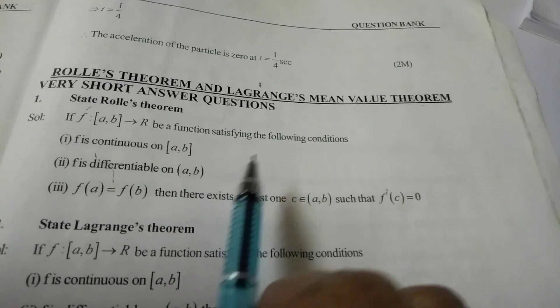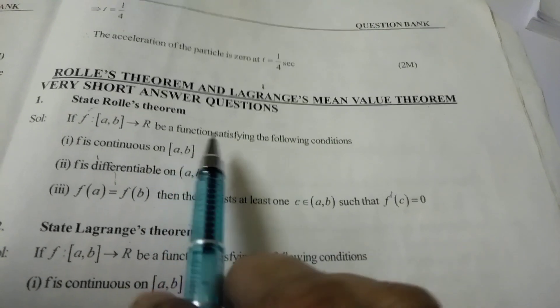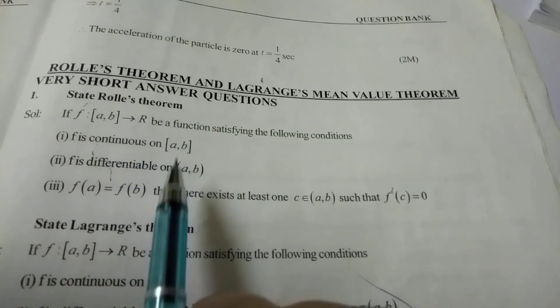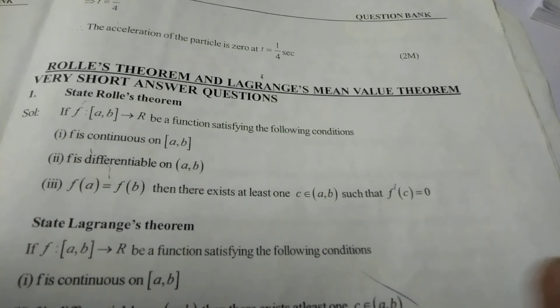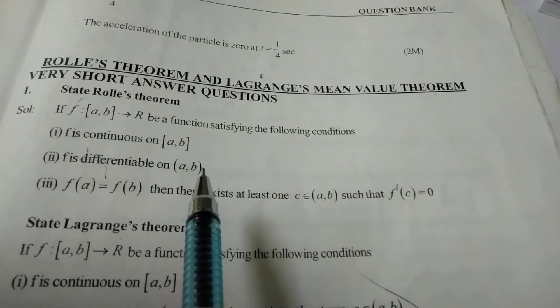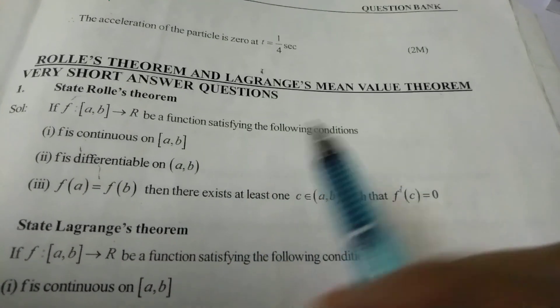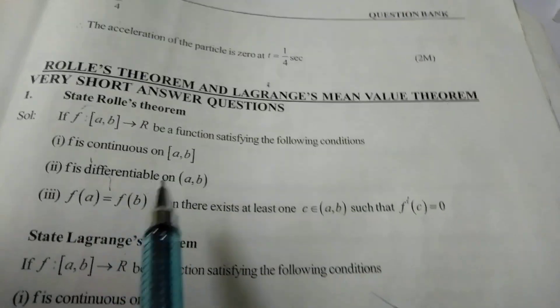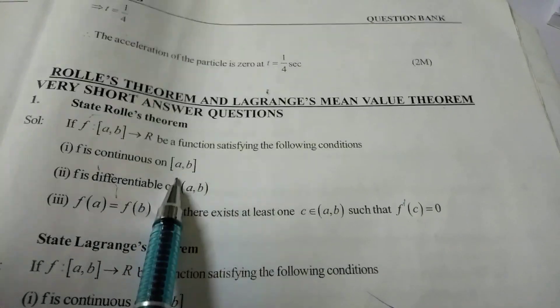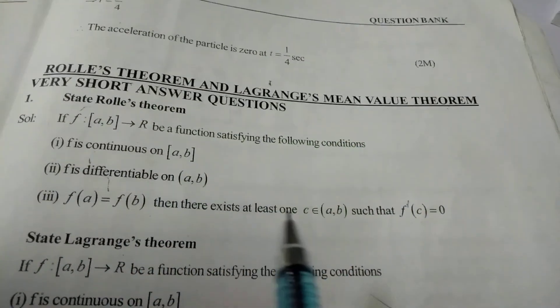This is the definition of Rolle's Theorem. If the question asks for a statement, you should write these three points and you will get one mark for each point.